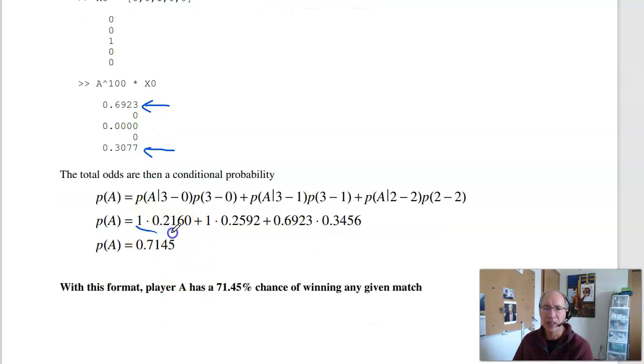So the total odds are then probability that A won going 3-0, plus the probability A wins going 3-1, plus the probability that A wins after going 2-2. Add them all up, I get 71%. So with this format, A has a 71% chance of winning. So tennis is actually pretty complicated to calculate. It's both a binomial distribution and a Markov chain. And that is homework set number 11 for ECE 341.